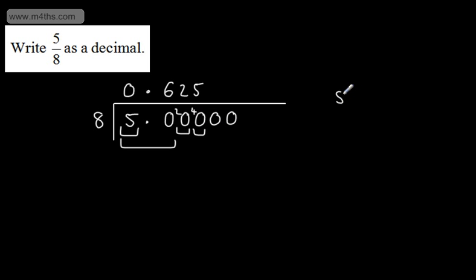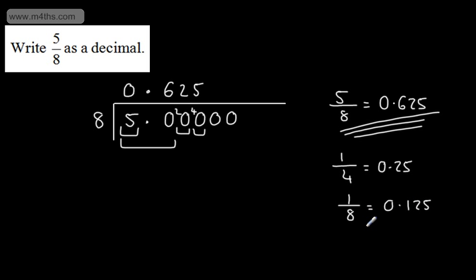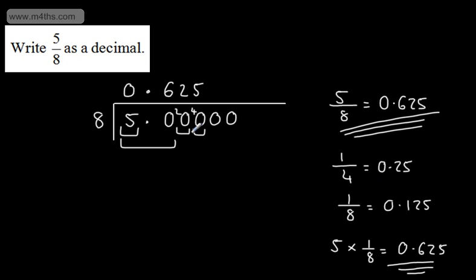We can say that 5/8 as a decimal is 0.625. Is this logical? Well, 1/4 = 0.25, and 1/8 is half of that, which is 0.125. So 5/8 is 5 times 1/8, giving 5 lots of 0.125, which is 0.625. So we've used short division to write a fraction as a decimal.